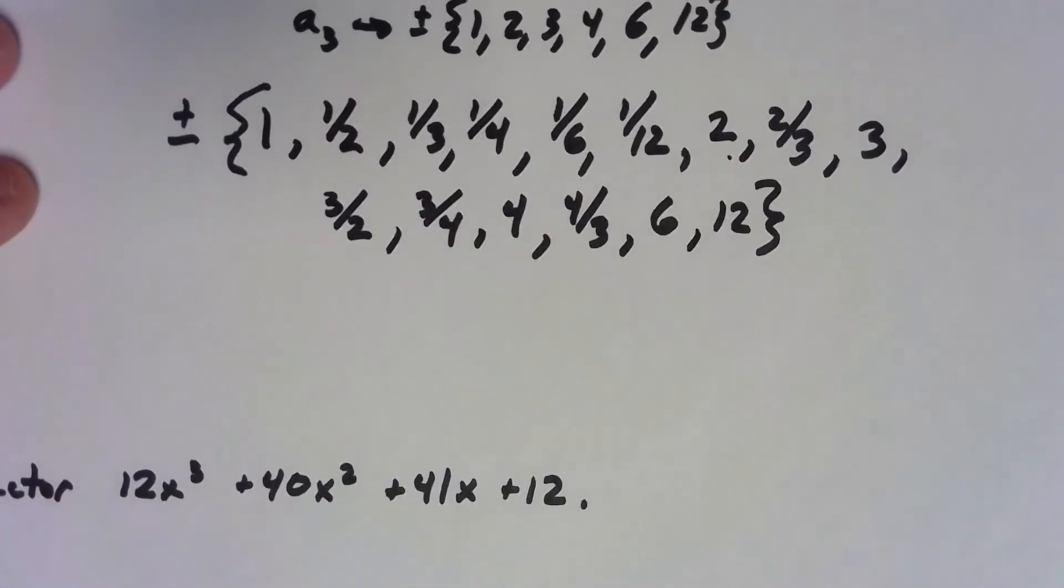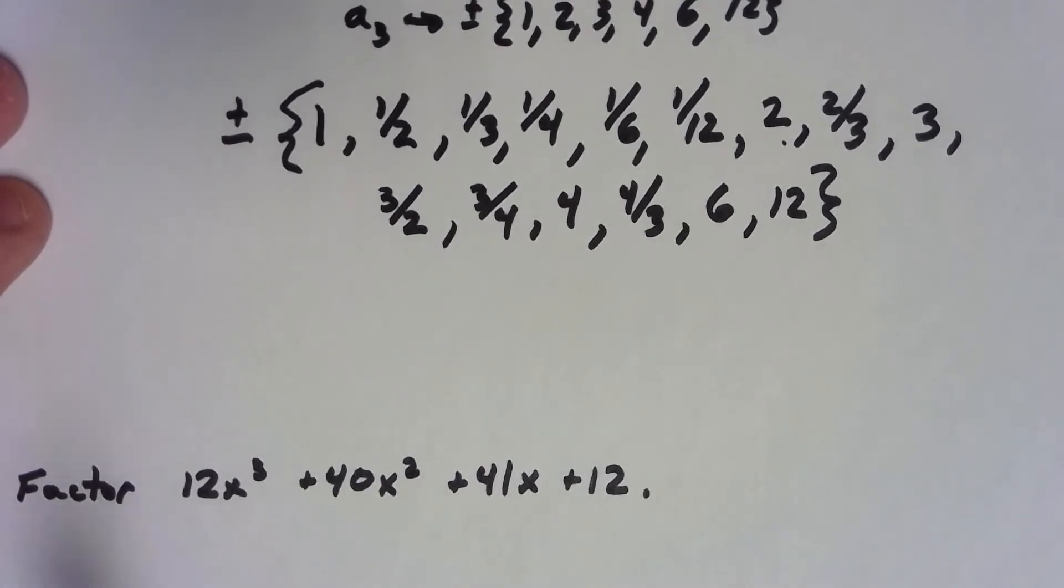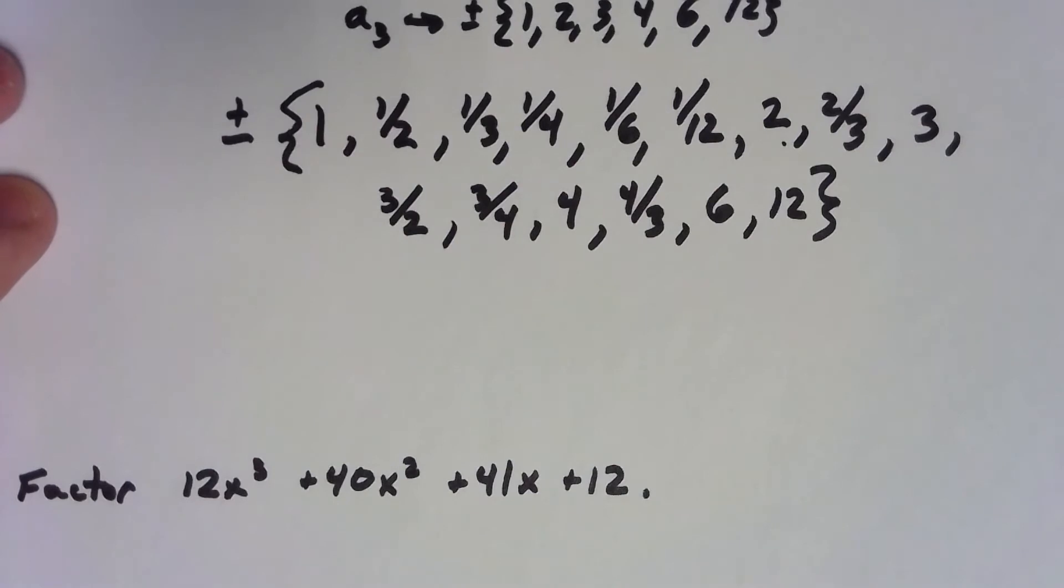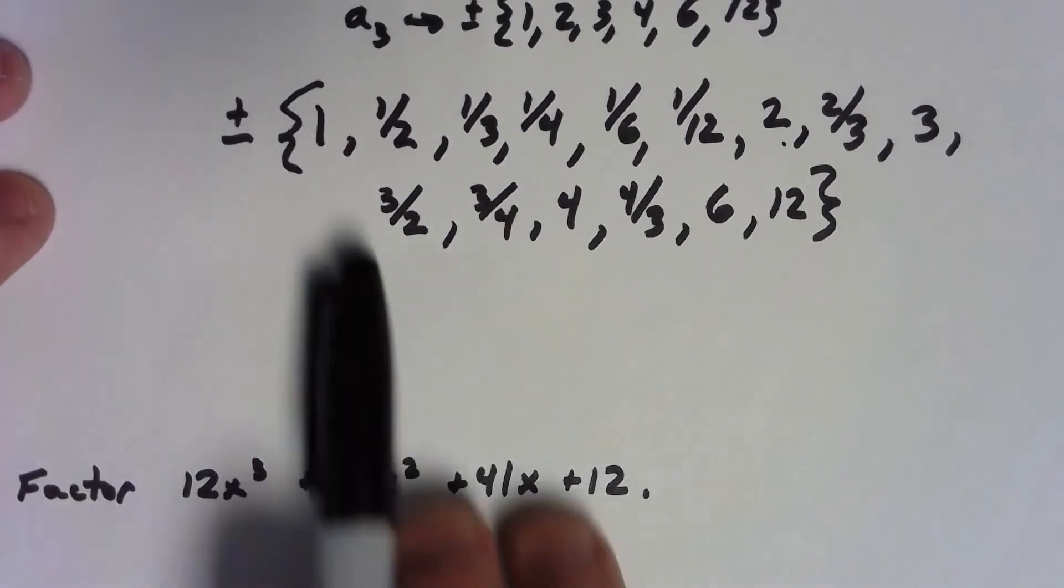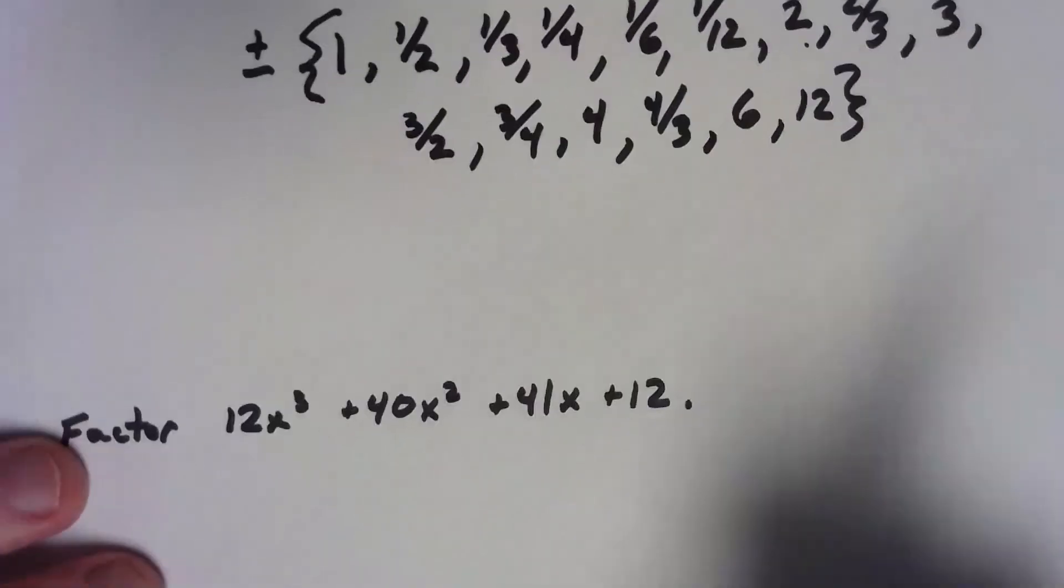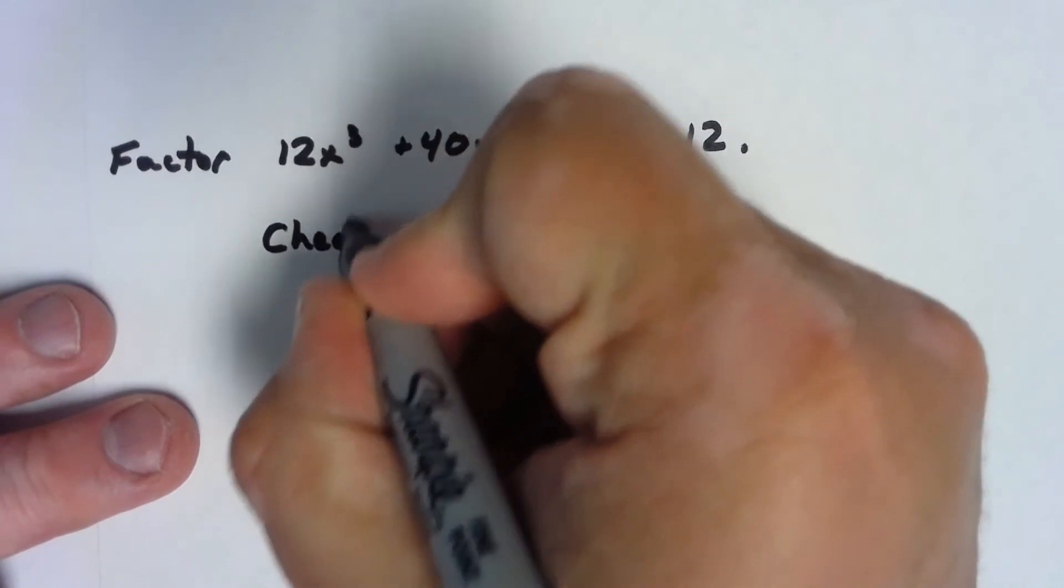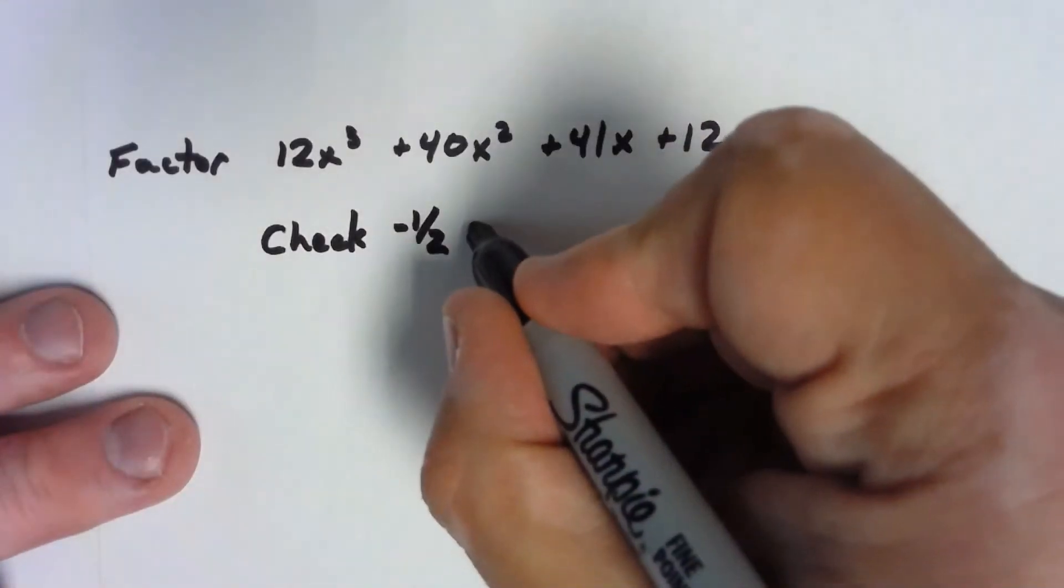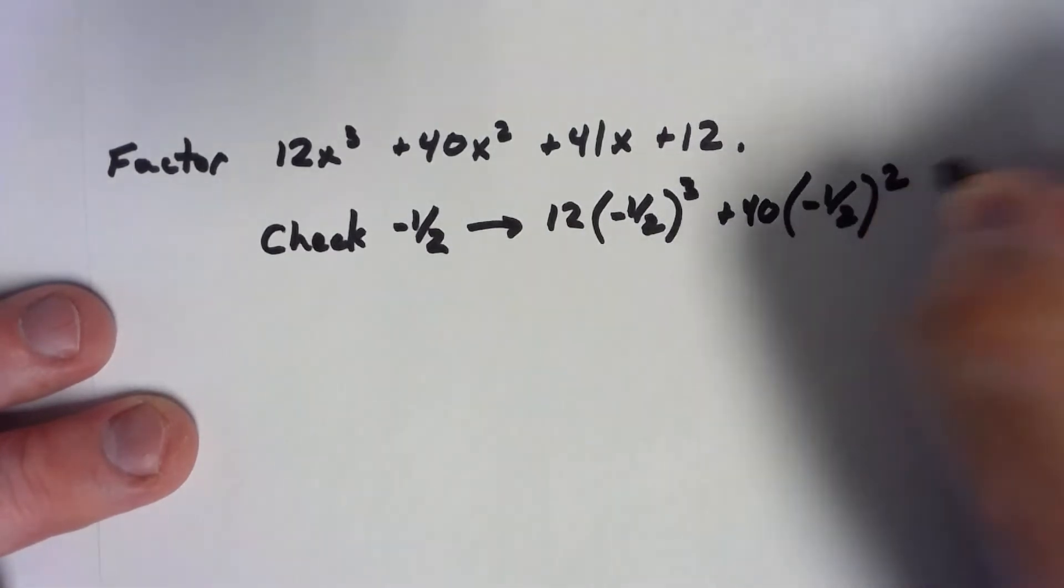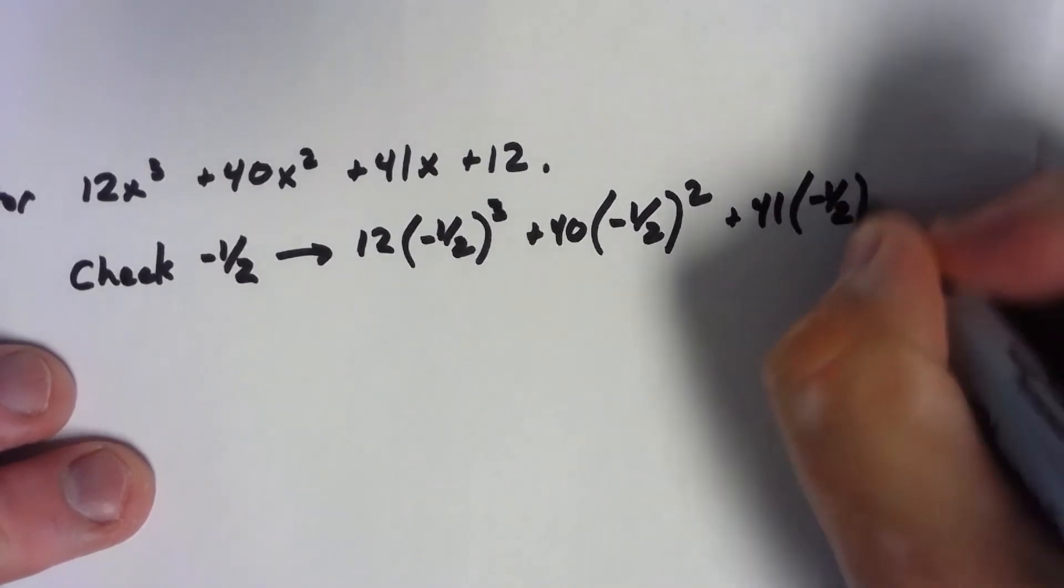Let's try a more complicated one. So, that same thing I had before, 12x cubed plus 40x squared plus 41x plus 12. We've got this whole long list of possible rational zeros. Just to save time on the video here, it turns out that actually none of the whole numbers work. So, let's skip to... I'm just going to go ahead to show you how this is done. Let's go ahead and show a negative one-half. If I check a negative one-half, I get 12 times negative one-half cubed plus 40 times negative one-half squared plus 41 times negative one-half plus 12.